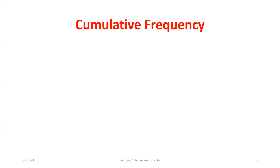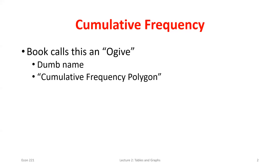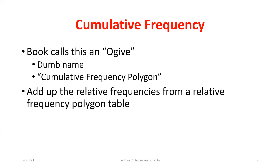The book refers to these as cumulative frequency polygons. We can do the same process with relative frequencies instead of raw frequencies. It's a little easier to conceptualize, but the procedure is identical — just using relative frequencies instead.